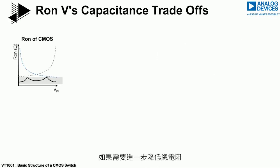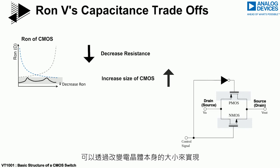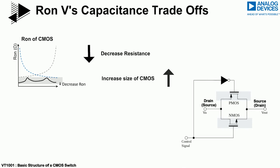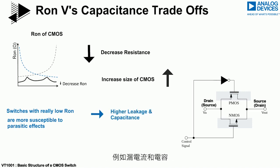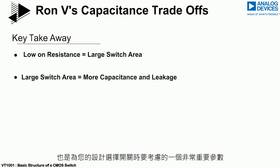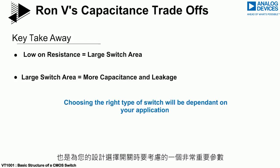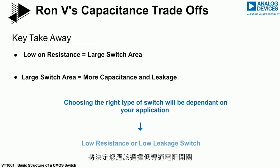If it is required that the overall resistance should be decreased further, the way this is done is to change the size of the transistors themselves. Decreasing the resistance requires increasing the transistor size. One thing to note is that for switches where the on resistance is really low, these are more susceptible to parasitic effects such as leakage current and capacitance. This is one of the main trade-offs when designing analog CMOS switches, and is a very important factor to consider when choosing a switch for your design. The positioning and application of the switch in your design will determine whether you should select a low resistance switch or a low leakage and low capacitance switch.